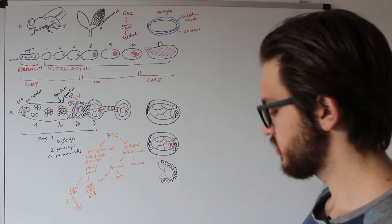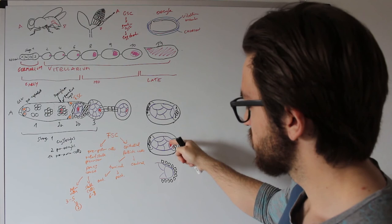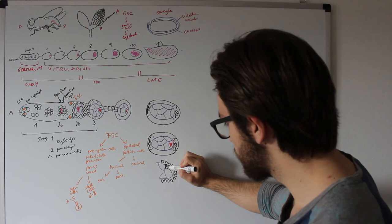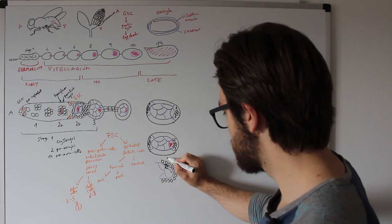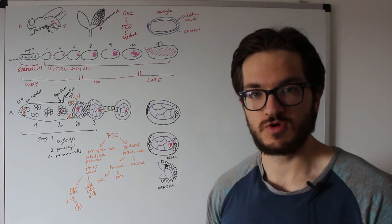The second thing that occurs is that the nucleus of the oocyte moves from its posterior position within the cell to the anterior upper margin. Then a specific signal goes from the nucleus up to the central follicle cells, making those cells dorsal by default, and the opposite cells ventral. They also signal back to the oocyte, determining the ventral axis. This establishes the dorsal-ventral axis of the oocyte.